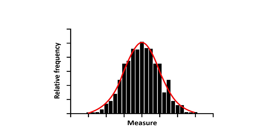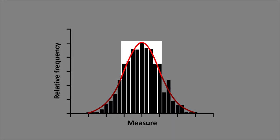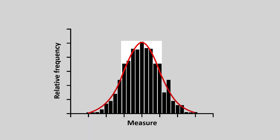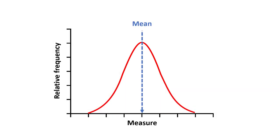A normal distribution occurs when many random factors interact on a certain measure, and this creates variability. Most of the time, these random factors offset each other, and so most values will be recorded at and around the mean value. The mean value can be seen as the centre point of the normal distribution.